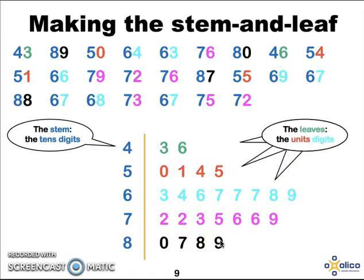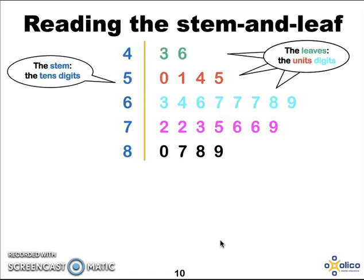Now there are many things that we can do with the stem and leaf plot. The first thing that we can do is we can read off any number. So, for example, when you put a stem and a leaf together you make a number.